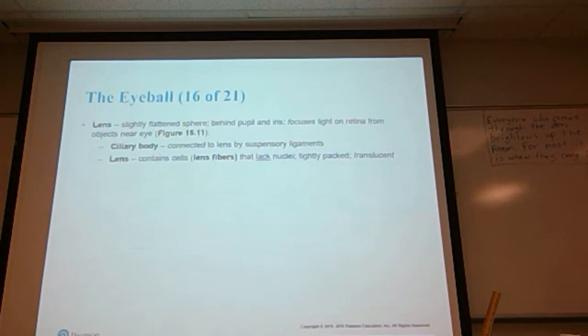The lens is a slightly flattened sphere behind the pupil and the iris. It focuses light on the retina from objects near the eye. Again, the ciliary body is connected to the lens by the suspensory ligaments. The lens contains cells or lens fibers that lack nuclei. They're very tightly packed and lay in parallel rows, which is what gives the lens its translucent appearance.